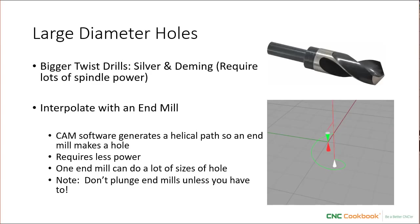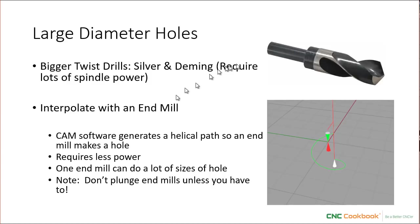Let's talk about our first trouble spot: large diameter holes. The first answer many come to for larger holes is to just use a bigger twist drill. These twist drills have a smaller shank — usually a half-inch shank — smaller than the bit's diameter; they're called silver and deming drills. Keep in mind they require a lot of spindle power, so if your machine isn't up to it, you may have to go with end mill interpolation rather than a bigger twist drill. But if your machine's up for it, a big twist drill will do a great job for you.